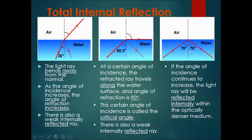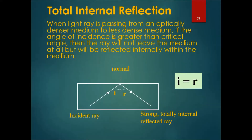Therefore, the angle of reflection would be the same as the angle of incidence. This is known as total internal reflection. For total internal reflection, when a light ray passes from an optically denser medium to a less dense medium, if the angle of incidence is greater than the critical angle, the ray would not leave the medium at all, but would be reflected internally within the medium.